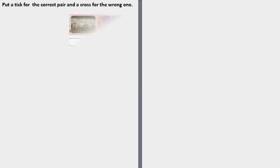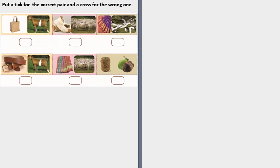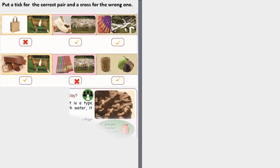Put a tick for the correct pair and a cross for the wrong one. The first is wrong. Second is correct. Third is correct. Fourth is correct. Fifth is wrong. Sixth is correct.